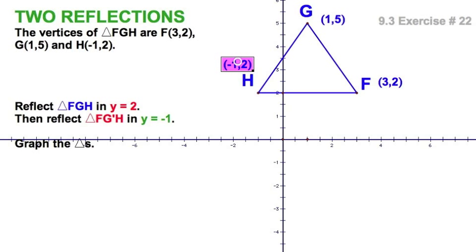First off, I've plotted this figure here according to the given points, and my first axis of reflection is right here. That's the line Y equals 2, and you can see it contains points H and F. Well, that's pretty convenient for us, because when we reflect, those points aren't going anywhere. They're already on the line of reflection.